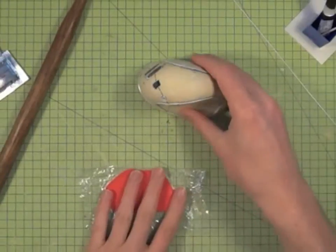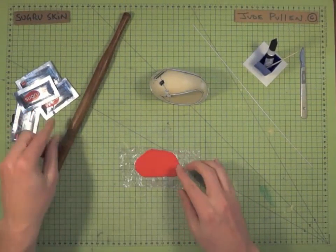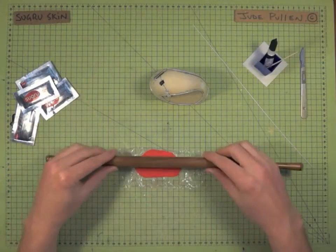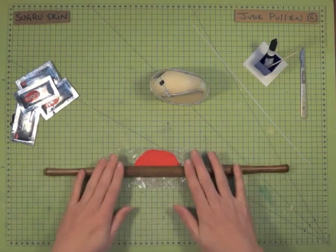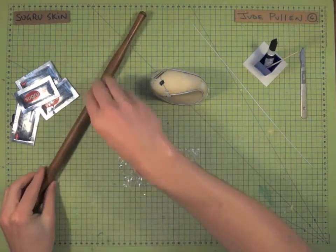And a nice technique I've developed of getting really thin Sugru is taking it out of the packet and then using a small rolling pin like this to roll it in between cling film.